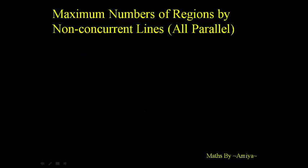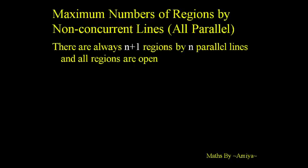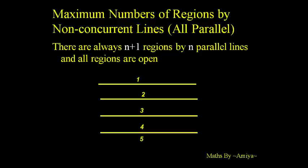The maximum number of regions by non-concurrent lines if all are parallel: there are always n+1 regions created by n parallel lines, and all regions are open. If we have four parallel lines, then we have five regions, and all regions are open — none is closed.